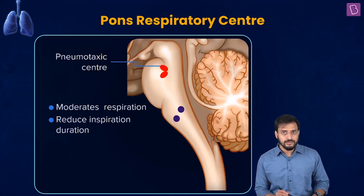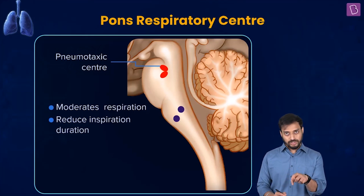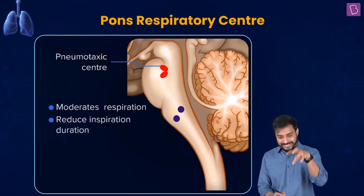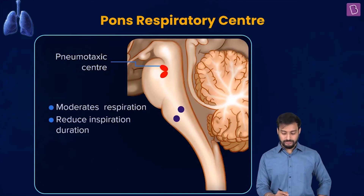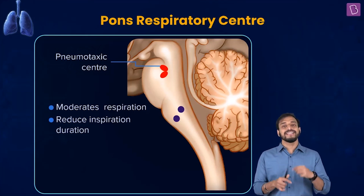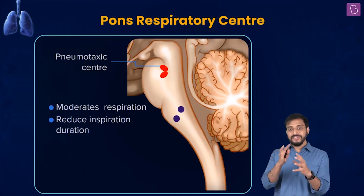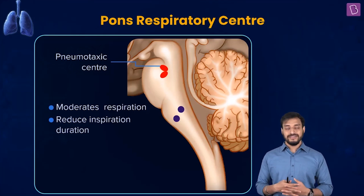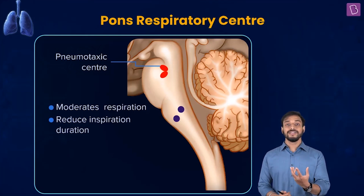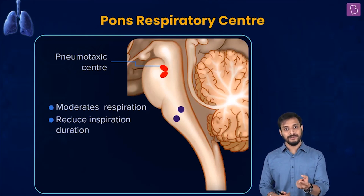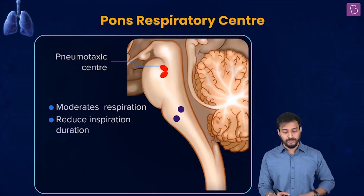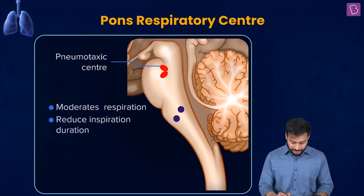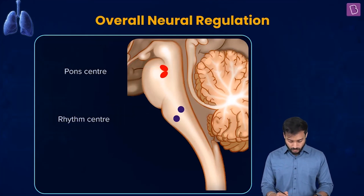The pneumotaxic center decreases the tidal volume — whereas the apneustic center was helping in increasing the tidal volume. Together, they regulate respiration: whenever you yawn you take deep long breaths — the apneustic center is controlling that. When you're doing normal breathing, it's the pneumotaxic center preventing those long deep breaths. Both work together to regulate respiration rates.